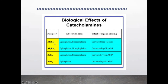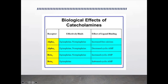The alpha-1 receptor responds to both epinephrine and norepinephrine equally, working through the inositol triphosphate mechanism via Gq receptors. Alpha-2 also responds to both equally, working through Gi proteins and decreasing cyclic AMP, making it inhibitory. Beta-1 responds to both equally but is more sensitive than alpha-1; it works through Gs proteins and increases cyclic AMP. Beta-2 responds to both but its effect is mainly due to epinephrine; its mechanism is also through Gs proteins, increasing cyclic AMP.